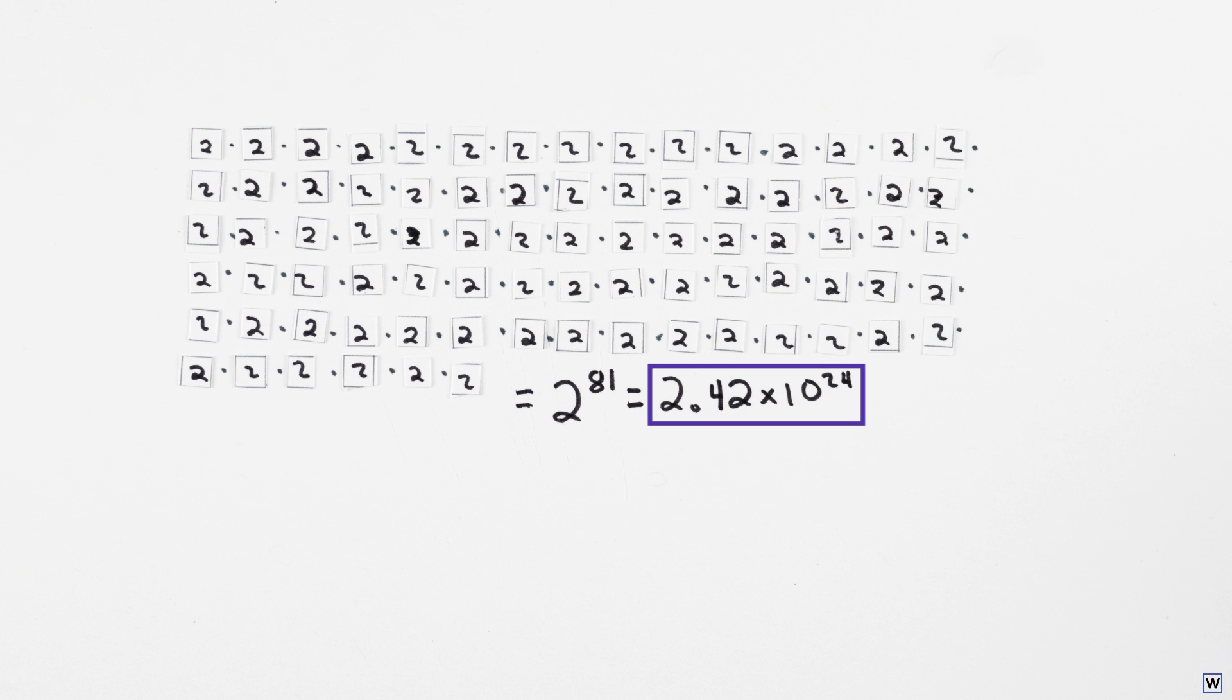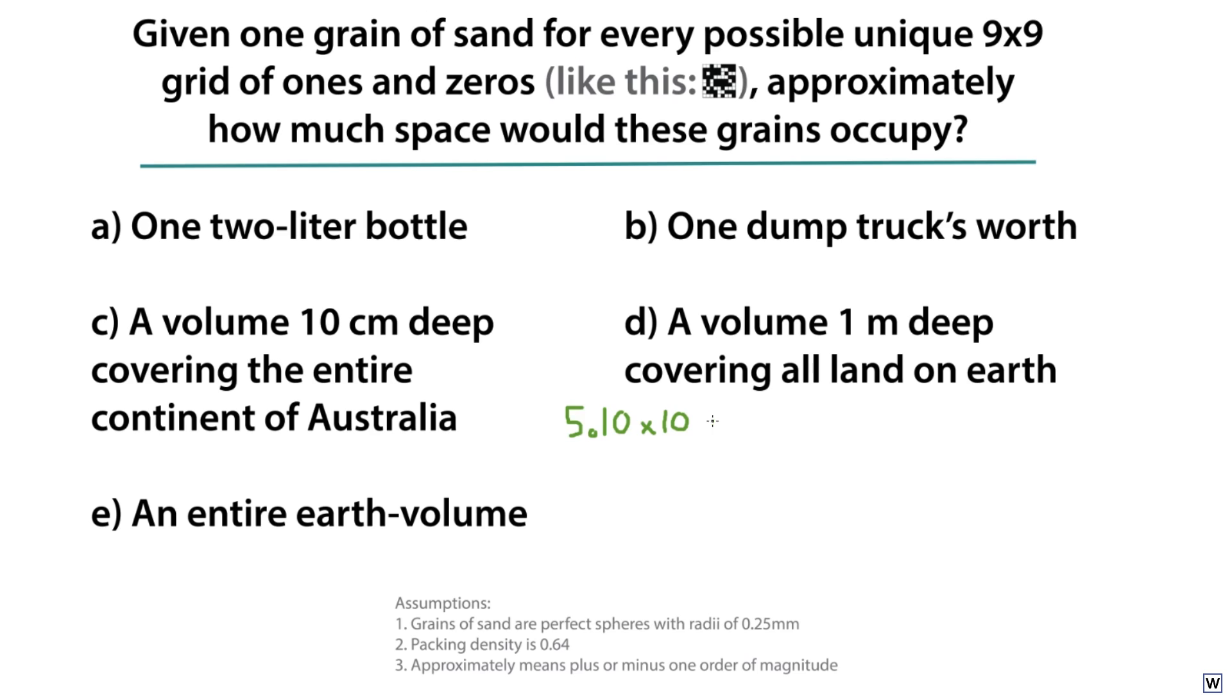That's 2.4 septillion possible rules. This many grains of sand is closest to answer choice D, which is like a lot.